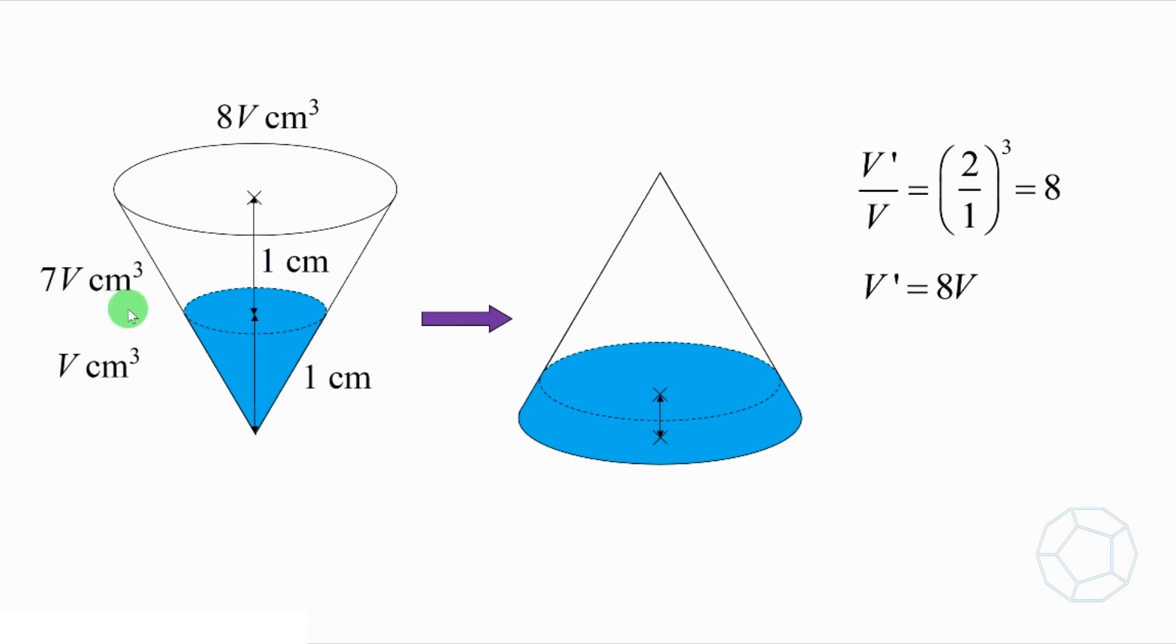Why do we bother to find this? Because it is exactly the volume of empty space after we turn it upside down. It is also in the shape of a cone. More importantly, it is similar to the original cone.